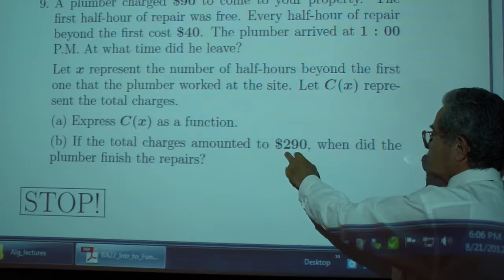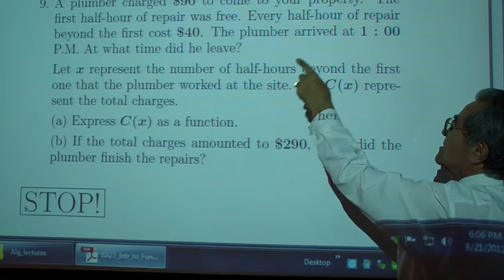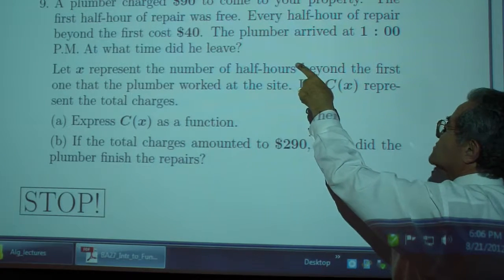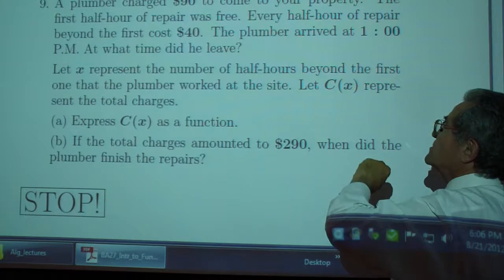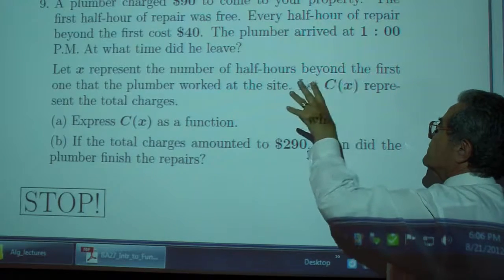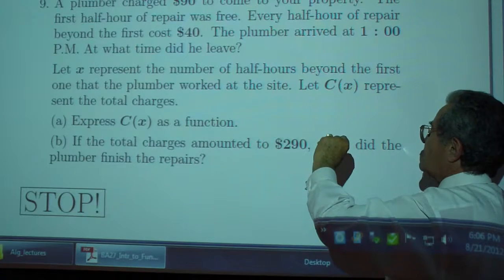So, your total bill was $290. You pay $90 for the plumber to come out. The first half hour is free. That's included in the $90. And then $40 for every additional half hour.